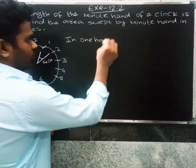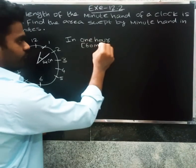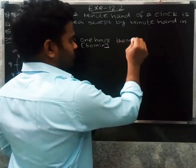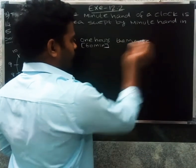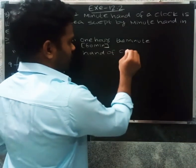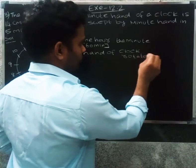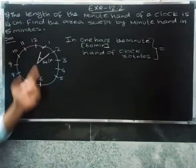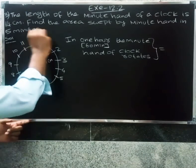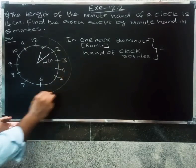In one hour, one hour is 60 minutes. In one hour, the minute hand of a clock rotates the total circle, which is 360 degrees.